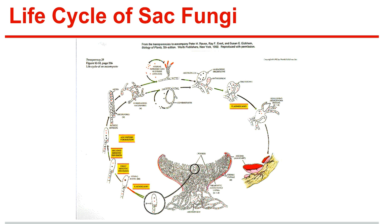Sac fungi, also known as ascomycetes, belong to the phylum Ascomycota. The phylum Ascomycota is named for the ascus, which is a reproductive structure that contains spores. There are over 30,000 species of ascomycetes, making it the largest phylum of the kingdom Fungi.